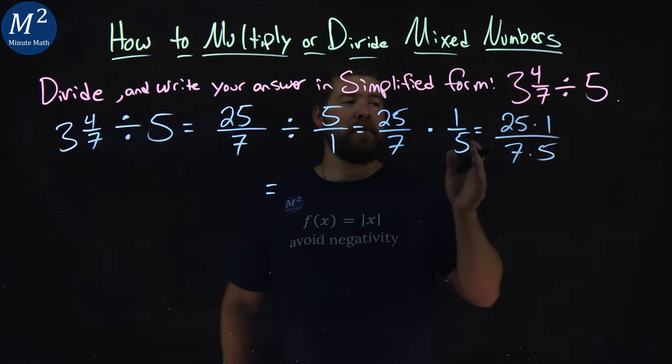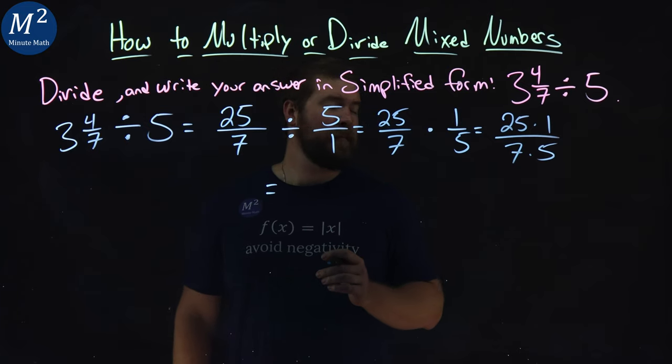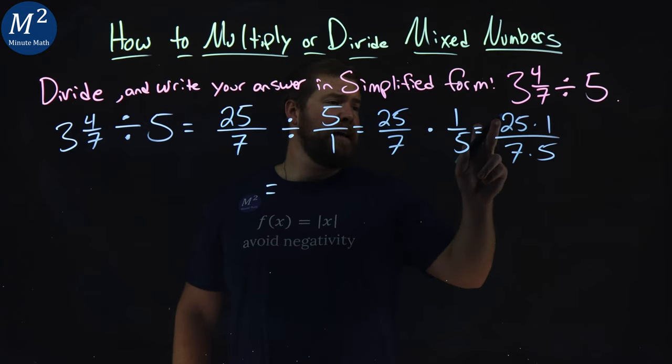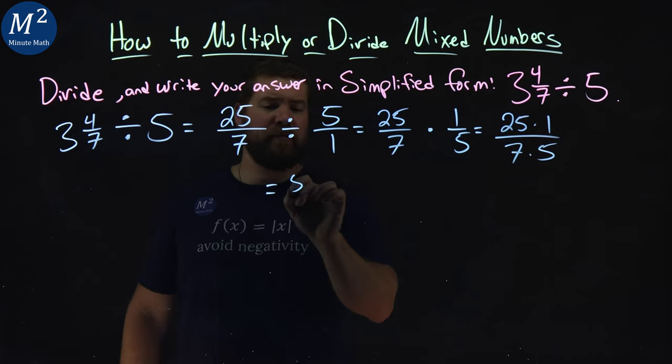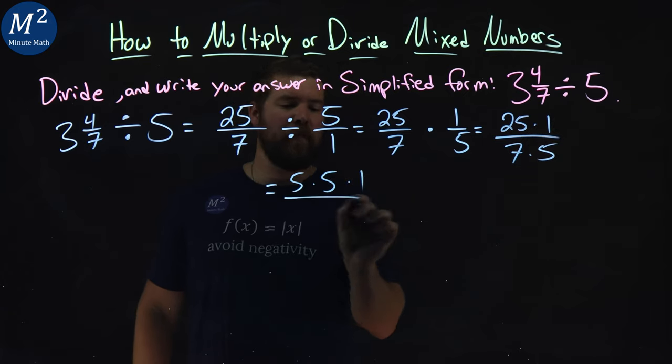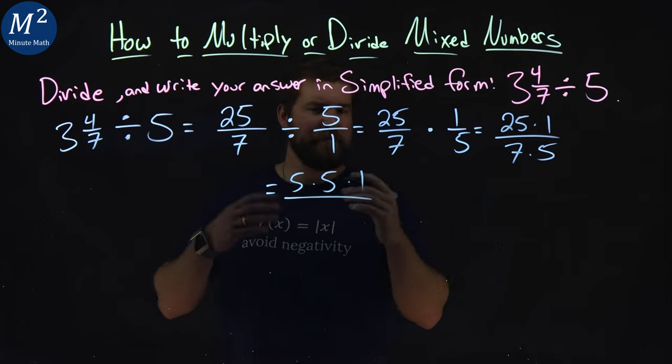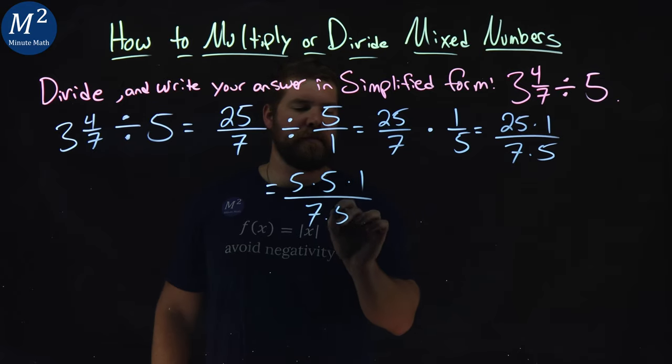Now, I purposely didn't break it down. You'll see why in a second. Or, multiply it out. 25 times 1. 25. That's 5 times 5. 5 times 5 times 1. 7 times 5 doesn't break down anymore. 7 times 5.